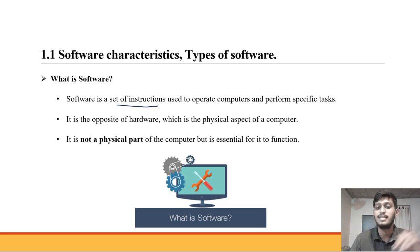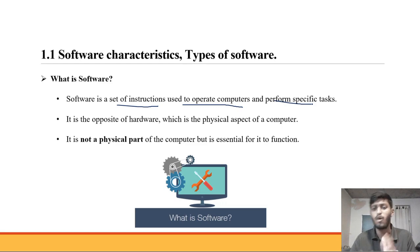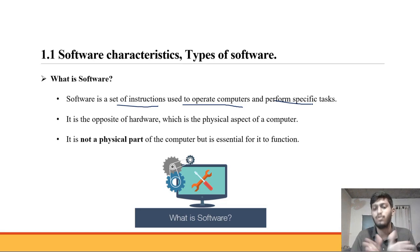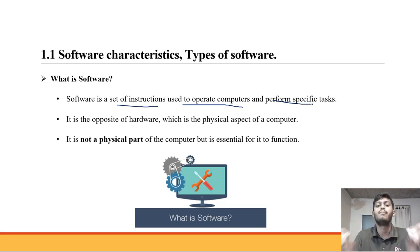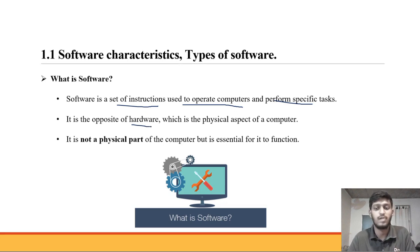So what is software? Software is a set of instructions used to operate computers and perform specific tasks. A computer is operated by software. Software is the opposite of hardware.